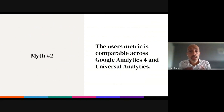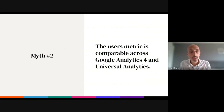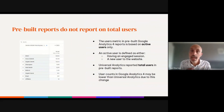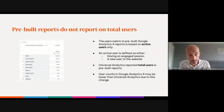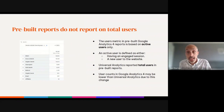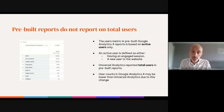Let's move on to our second myth. It is a myth that the users metric is comparable across Google Analytics 4 and Universal Analytics. There are three reasons why this isn't the case. Firstly and importantly, all pre-built reports in Google Analytics 4 are based on active users and not total users. An active user is defined as a user that has either an engaged session or is a new user to the website. Universal Analytics pre-built reports were always based on total users. Therefore, user counts in GA4 pre-built reports may look lower than their corresponding Universal Analytics reports.